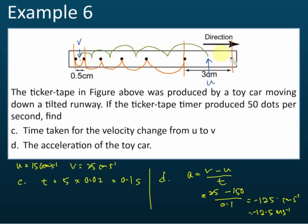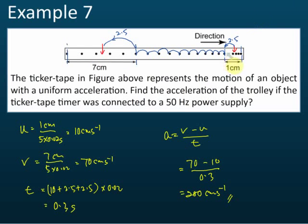You see these two examples are different. The first one had only one tick, which is easy. But this one — the length measured includes five ticks and five ticks. So there is a little difference. You can't say you don't understand — why 2.5 ticks? Let me explain.